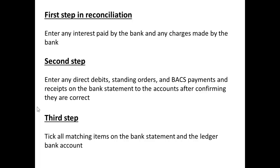The easiest way to carry out a reconciliation is to do it in a series of steps. First, enter any interest paid by the bank and any charges made by the bank. Secondly, enter any direct debits, standing orders, bank payments and receipts on the bank statement to the accounts in the cash book after confirming they are correct. Third, tick all matching items on the bank statement and the ledger bank account or cash account, and then you should be ready to write a reconciliation statement.